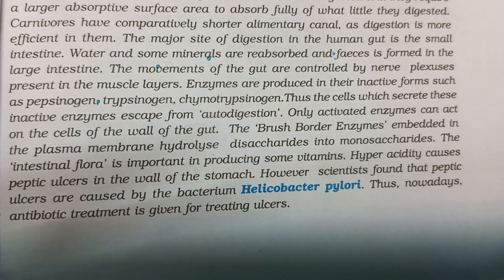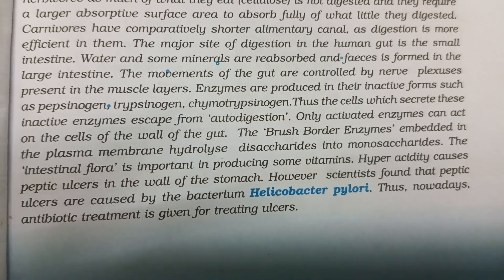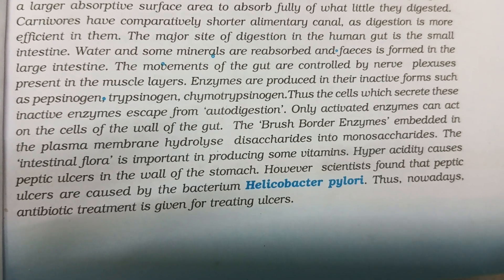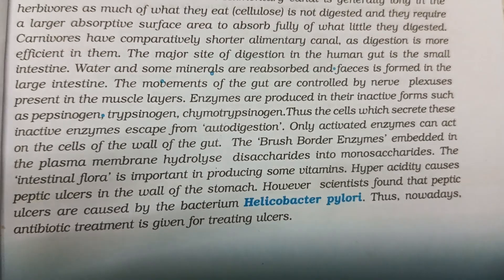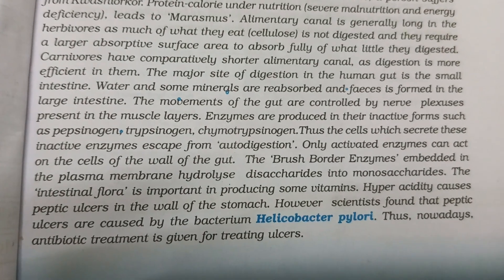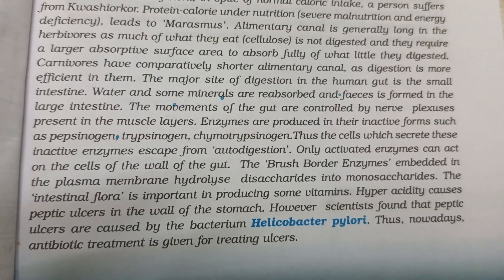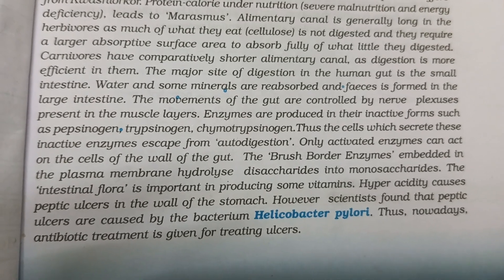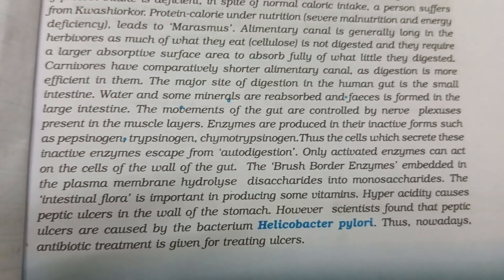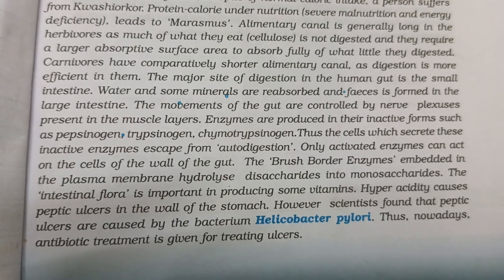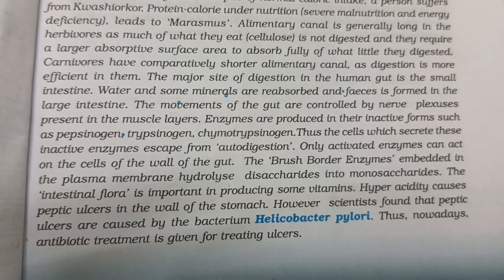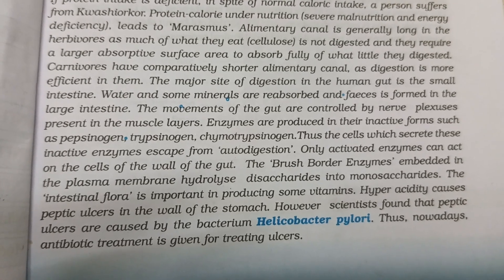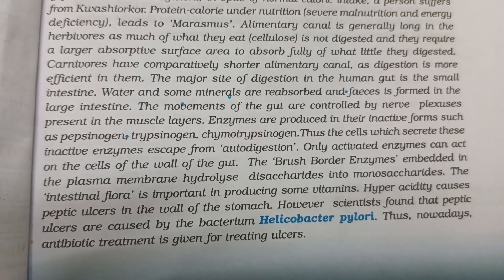Brush border enzymes embedded in the plasma membrane hydrolyze disaccharides into monosaccharides. The intestinal flora is important in producing some vitamins.